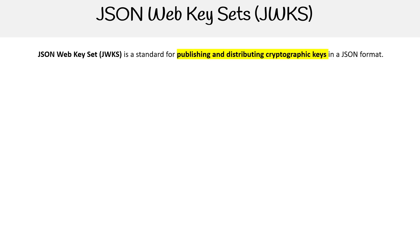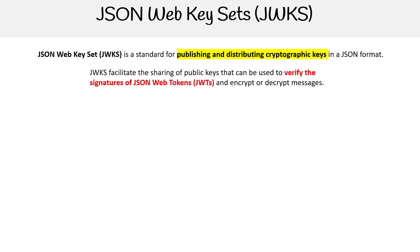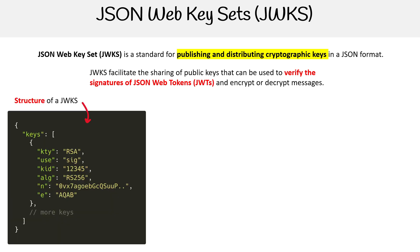Let's take a look at JSON web key sets, or JWKs. This is a standard for publishing and distributing cryptographic keys in JSON format. JWKs facilitates the sharing of public keys that can be used to verify the signatures of JSON web tokens and encrypt or decrypt messages.